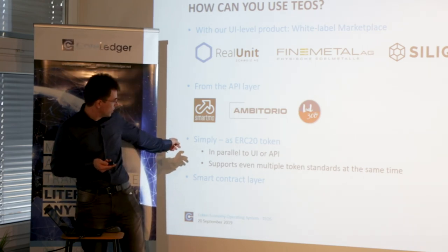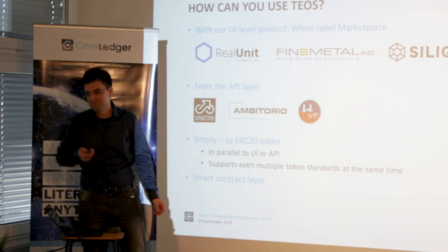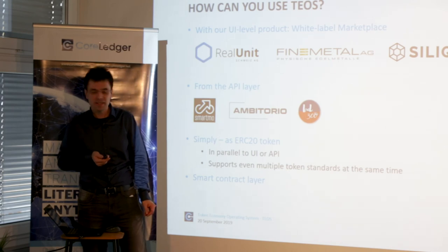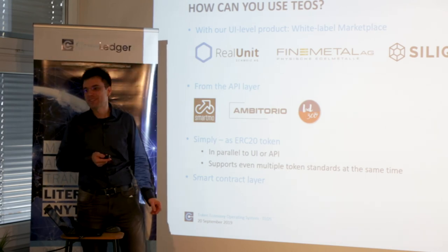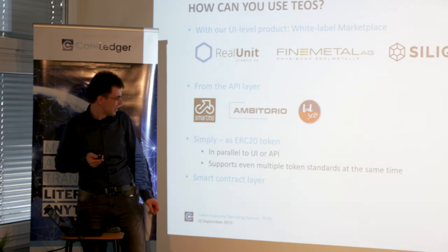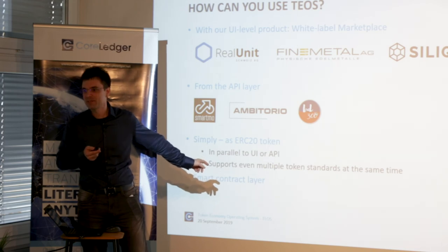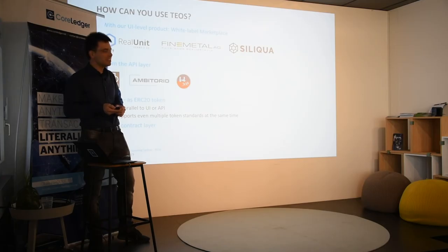Then you can use it in the form of an ERC-20 token — that's kind of primitive now, but it's possible. You simply attach a so-called proxy contract. And the last layer is of course the Smart Contract layer — our marketing refused to put a picture of me in because I'm always using TEOS from the Smart Contract layer since I don't need the UI. So that's how TEOS can be used and how the features can be accessed.